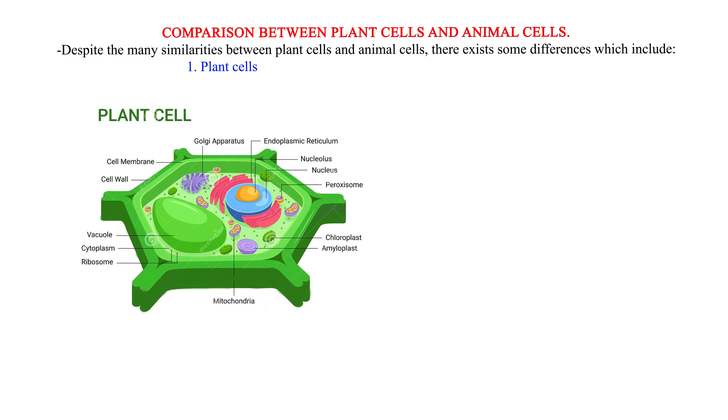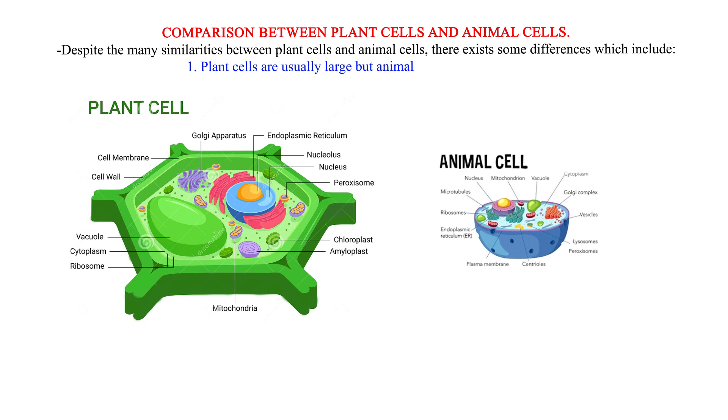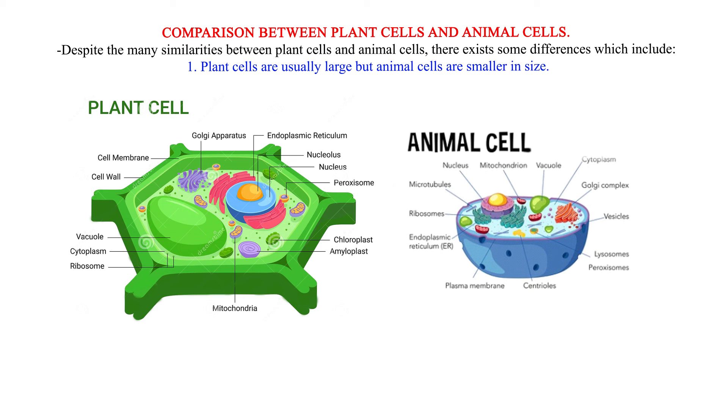Comparison between plant cells and animal cells. Despite the many similarities between plant cells and animal cells, there exists some differences which include: 1. Plant cells are usually large but animal cells are smaller in size.